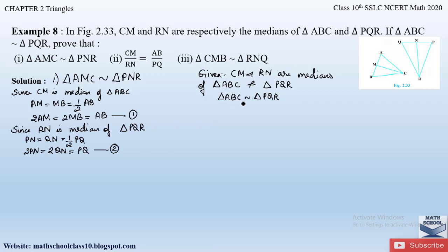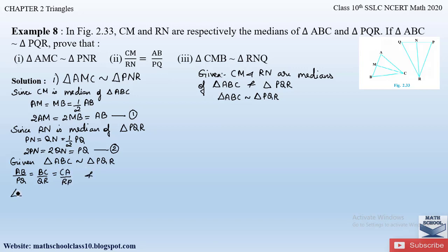Since triangle ABC is similar to triangle PQR, the sides are in equal proportion: AB/PQ = BC/QR = CA/RP, and the corresponding angles are equal: angle A = angle P, angle B = angle Q, angle C = angle R. The reason is that corresponding sides of similar triangles are proportional and corresponding angles are equal. Let this be equation number 3.